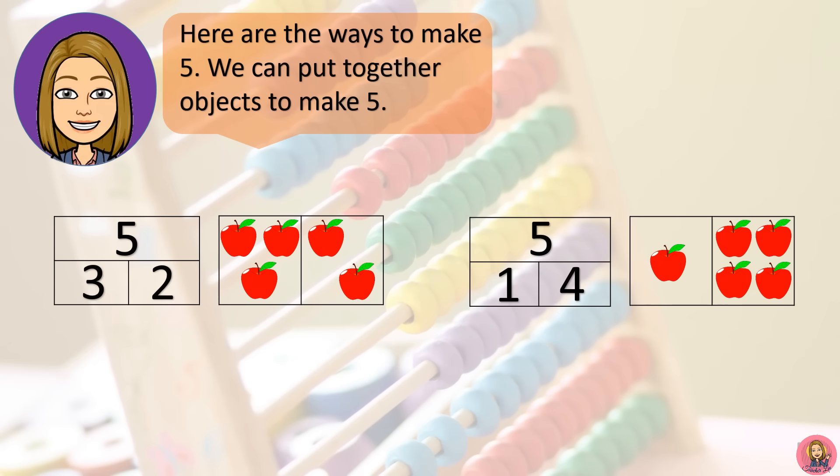Here are the ways to make 5. We can put together objects to make 5. 3 and 2 is 5. Or, 1 and 4 is 5.